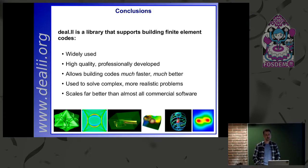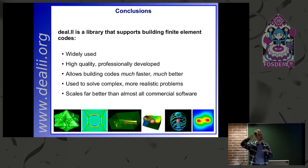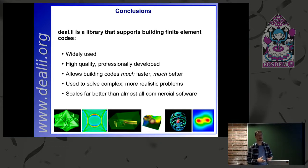Question: Is deal.II a software that allows you to write solvers from scratch? Yes, exactly — it's a collection of data structures and algorithms. It has a mesh data structure, matrix data structure, and vector data structure. The algorithms include adaptive mesh refinement — making the mesh fine where the solution is oscillatory and keeping it coarse where the solution is smooth — and linear system solvers, among others. A deal.II program, while written in C++, doesn't look fundamentally different from what you'd write in MATLAB. About half the lines of code are actually calls into deal.II — you could say we use C++ as our domain-specific language.